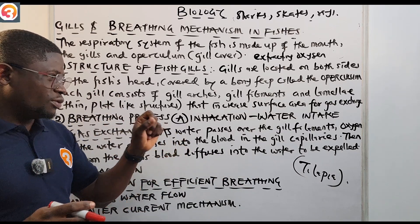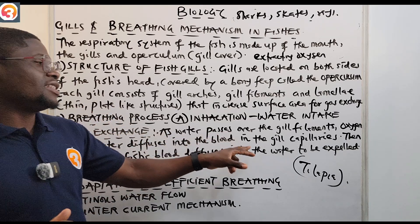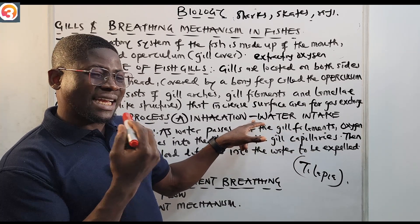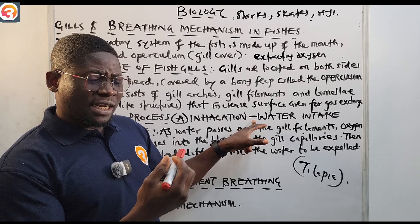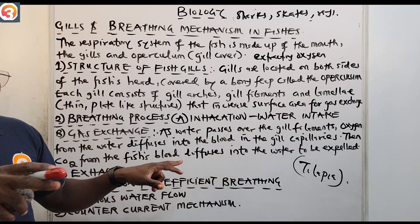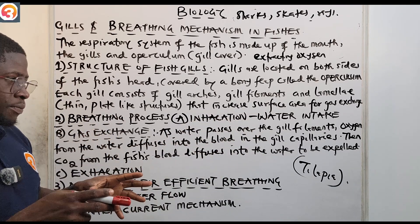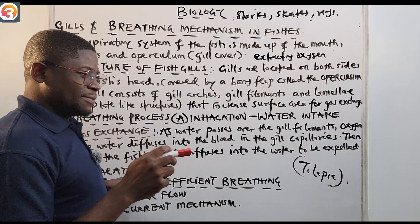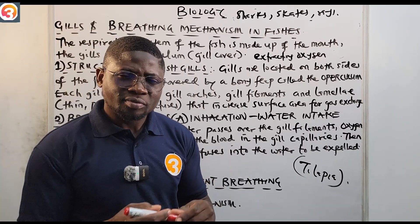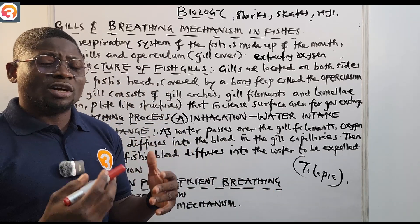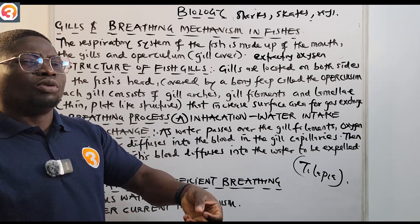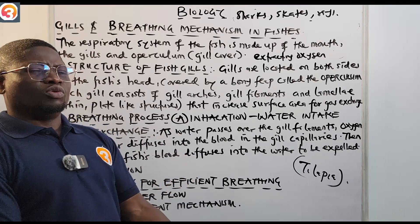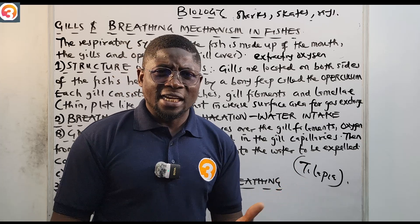To recap the gas exchange: water taken in through the mouth during inhalation — operculum closed, creating a vacuum — flows over the gill filaments. Oxygen diffuses into the blood in the gill capillaries, and CO2 from the fish's blood diffuses into the water to be expelled. During exhalation, the mouth closes and the operculum opens, and water rushes out through the operculum.